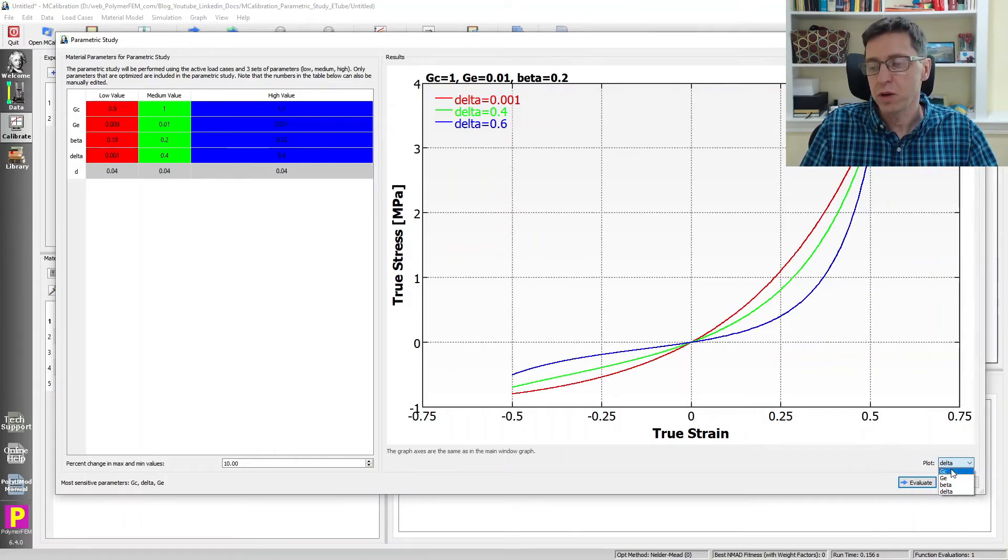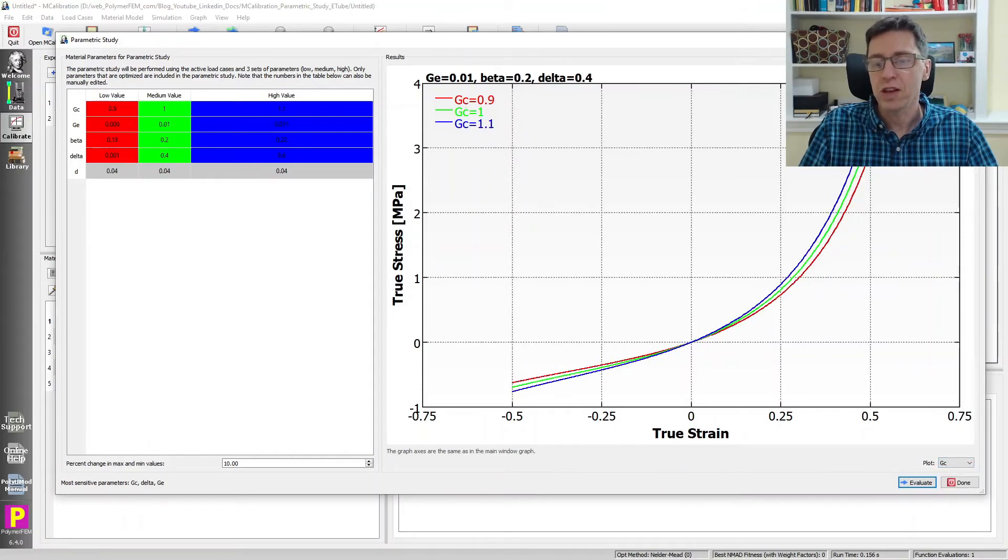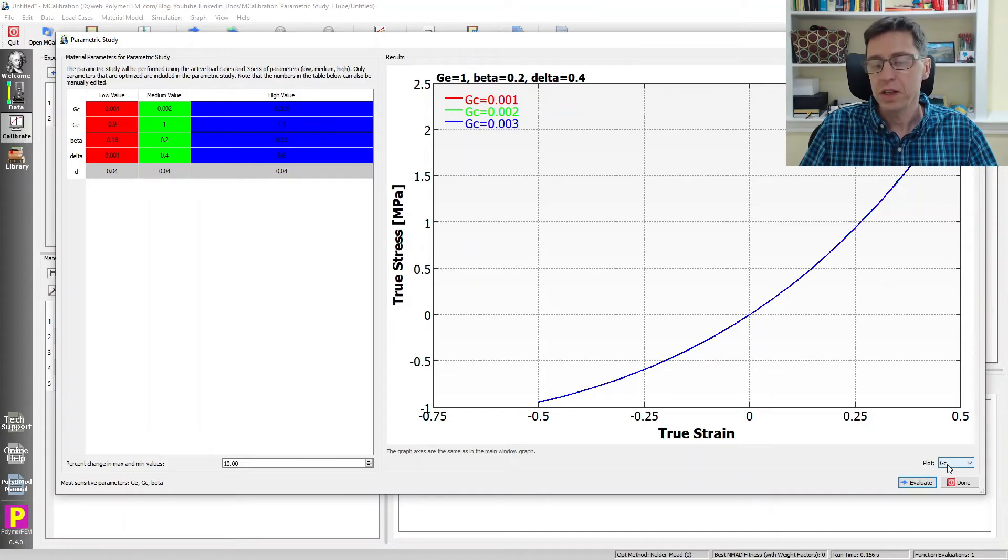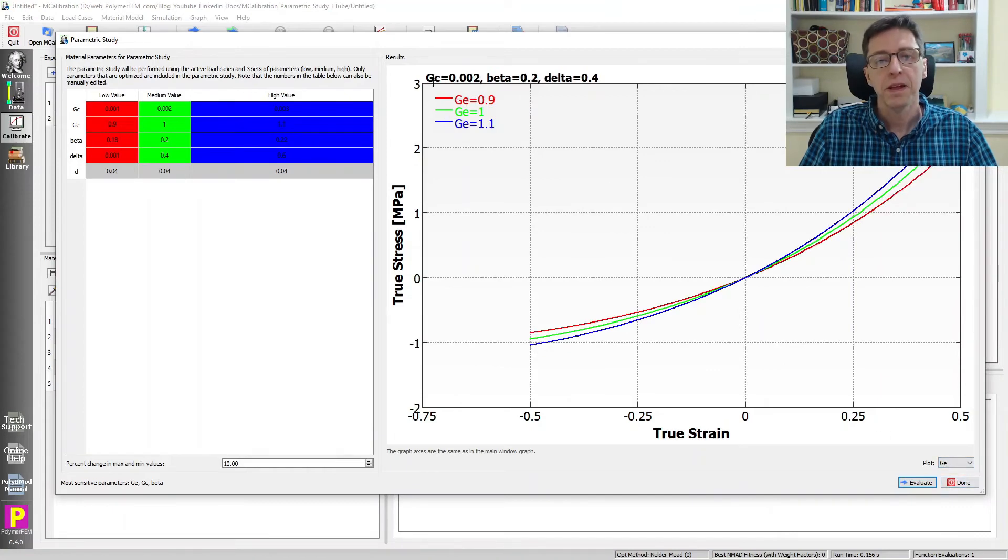So that's the GC. And GC, simply as we saw before, the parameter GC just scales how the modulus is, scales the whole curve up and down. Let's take a look at GE and beta. So to look at those, I'm going to make the GC term very, very small. I'm going to make this 0.9, 1, 1.1, and then evaluate these. Now the influence of GC is very small because they were very small stiffnesses. But switch over to GE. Now the GC term and delta are not really active, so it's beta and GE that are active. And GE, as expected, scales the curve up and down linearly with respect to the GE value.